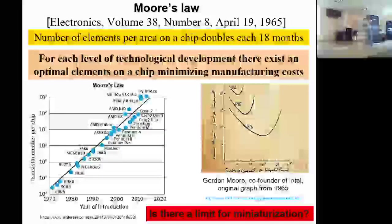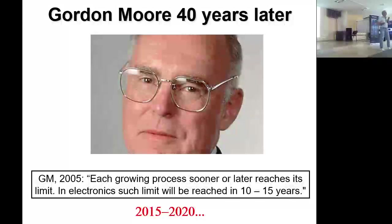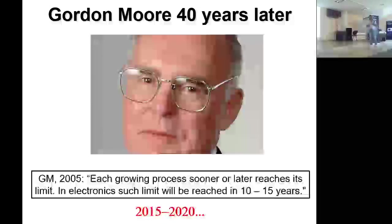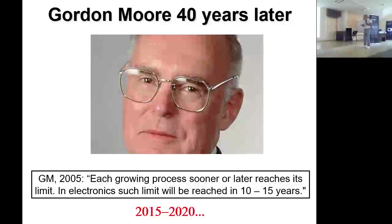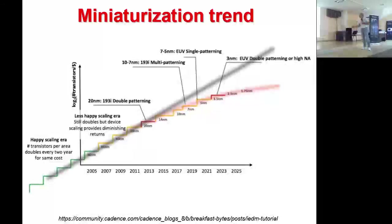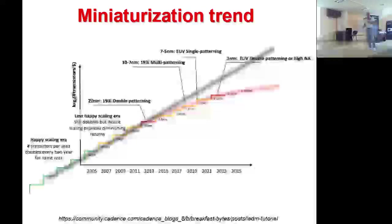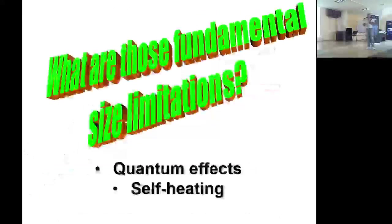В 1965 году было всего 100 транзисторов на чипе, сейчас — больше миллиарда. В 2005 году Гордон Мур в интервью Washington Post ответил, что через 10–15 лет наступит предел закону Мура. То есть примерно к 2015–2020 годам. И действительно, примерно с 2017–2018 года линейная зависимость в логарифмическом масштабе перестала выполняться. Ограничивающий фактор — как правило, ширина затвора транзистора.